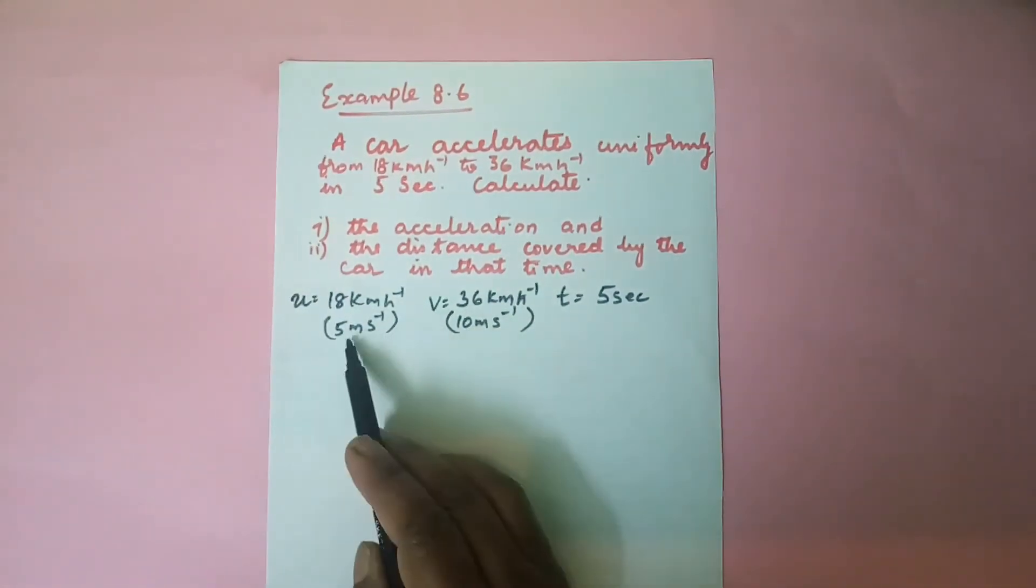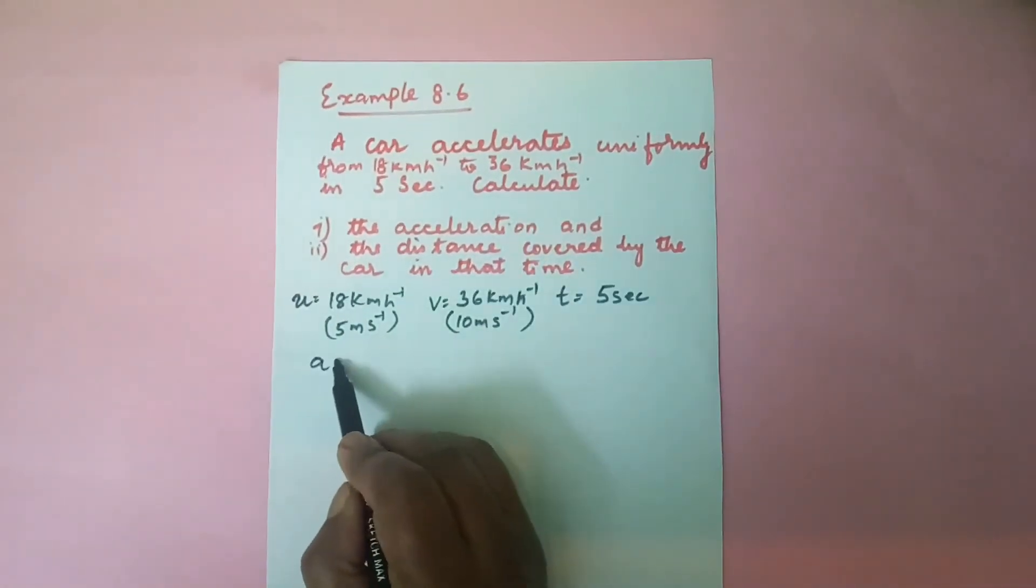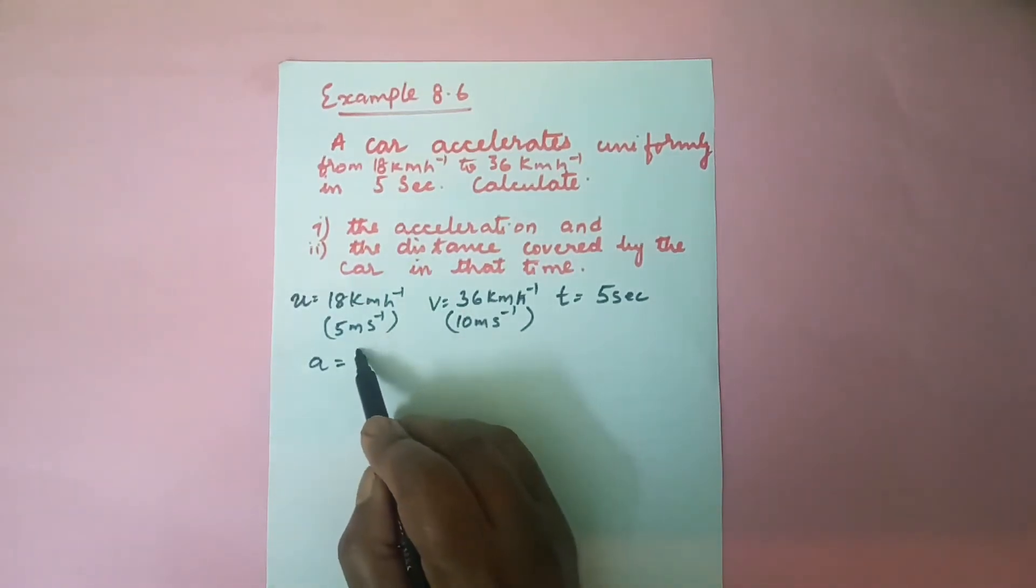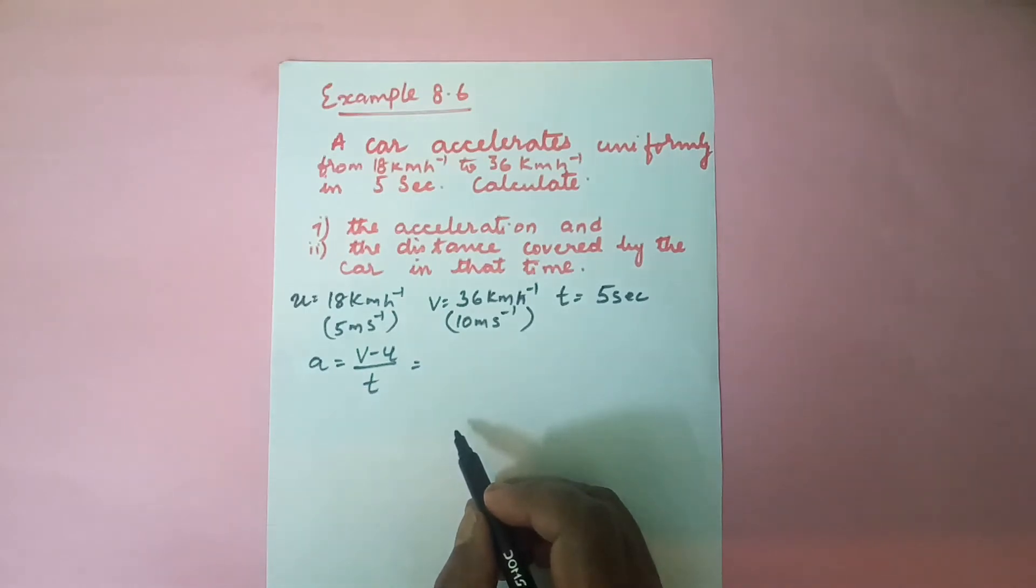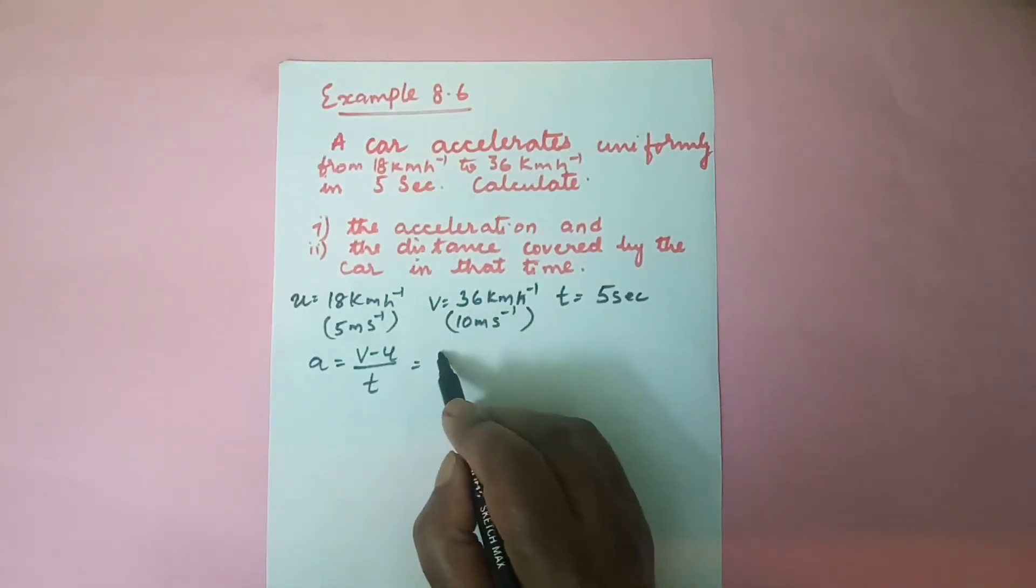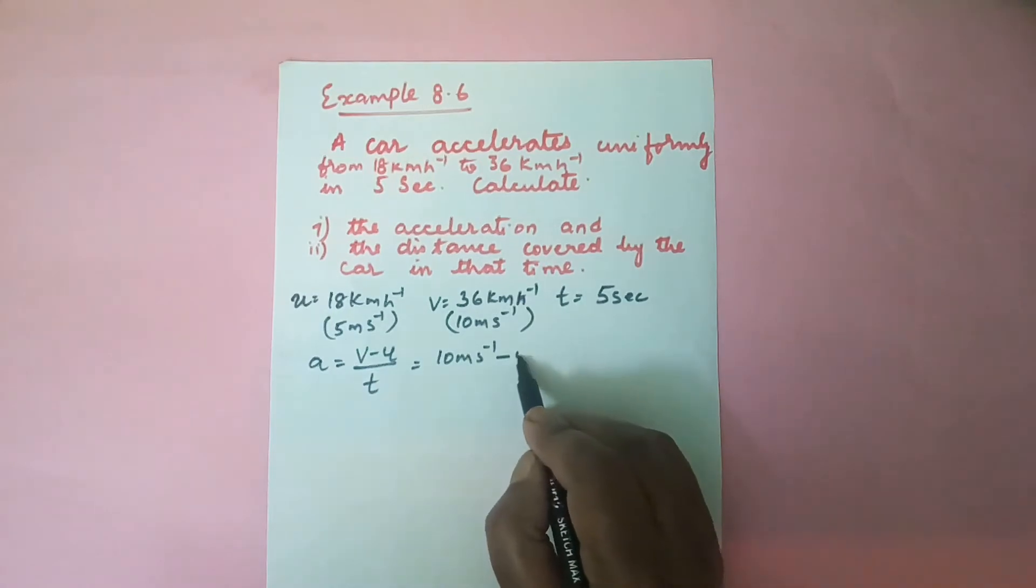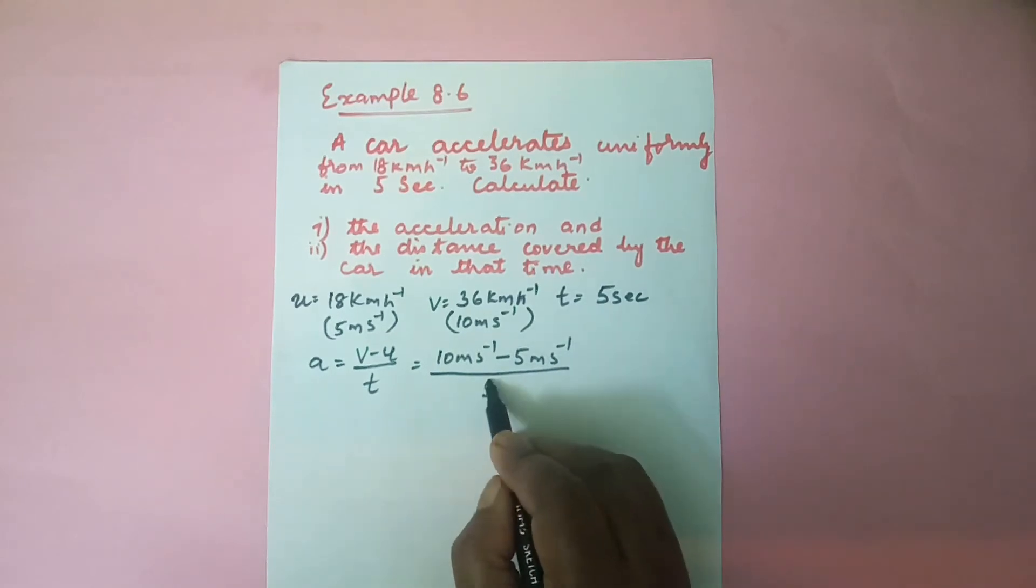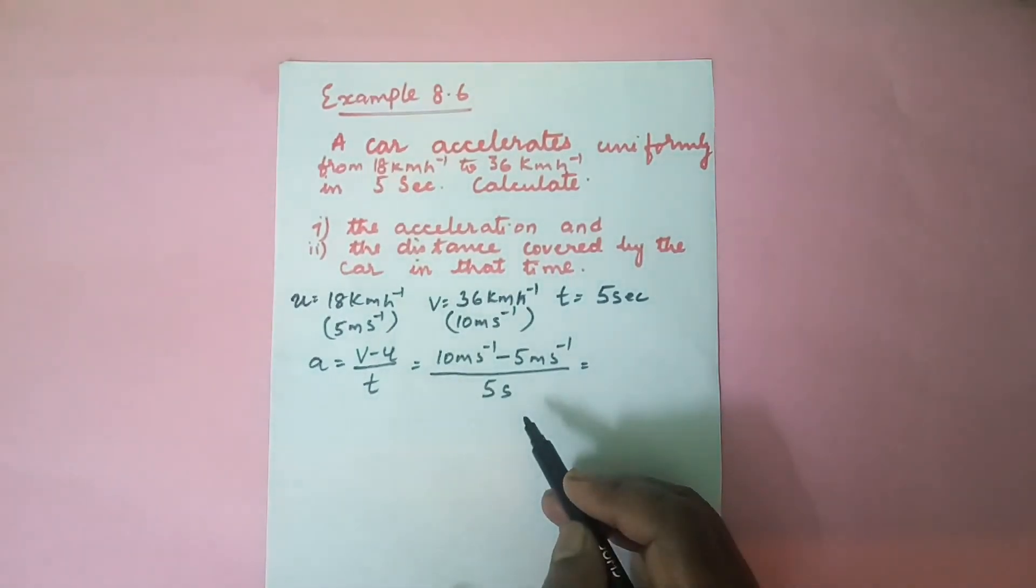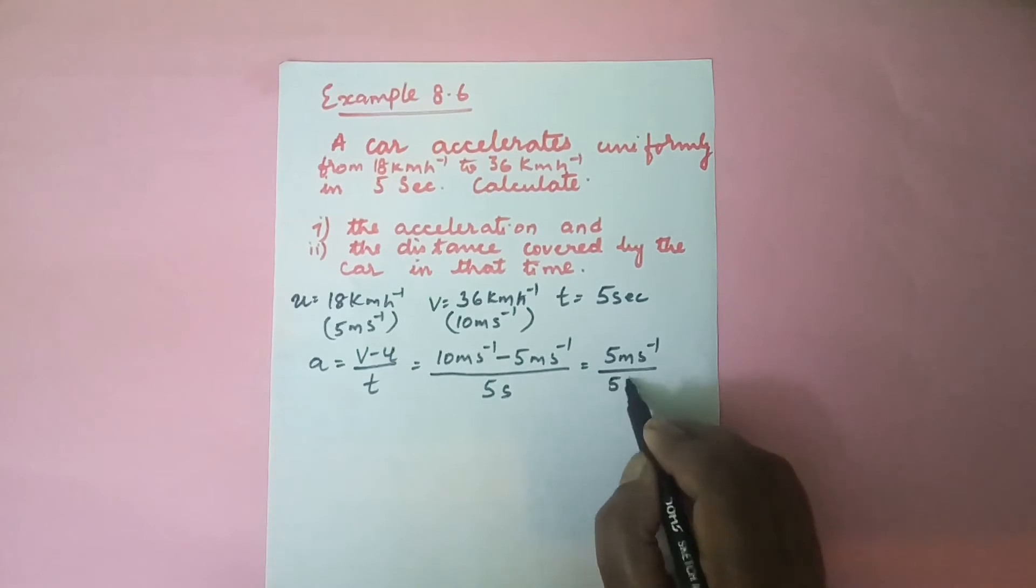We shall solve these by substituting these values to the equations. So first question asking us to find out acceleration. Acceleration a = (v - u) / t. So according to the sum, after the conversion, a = (10 m/s - 5 m/s) / 5 seconds.